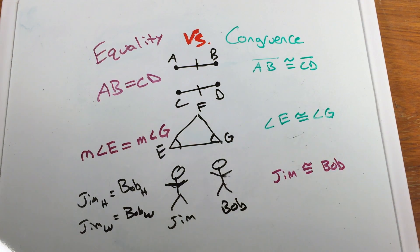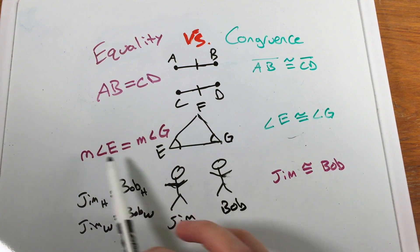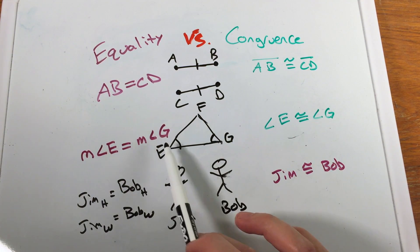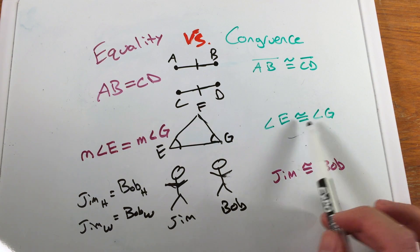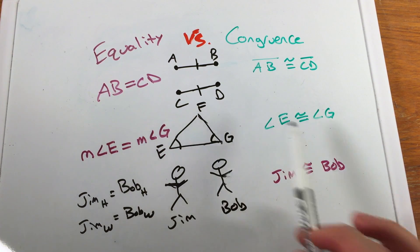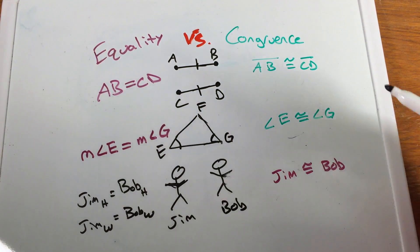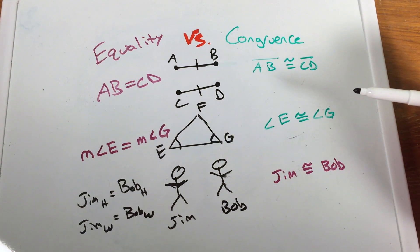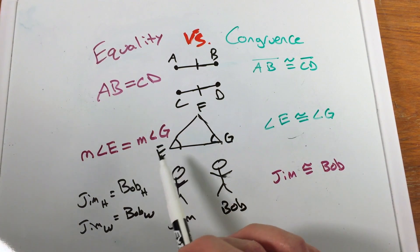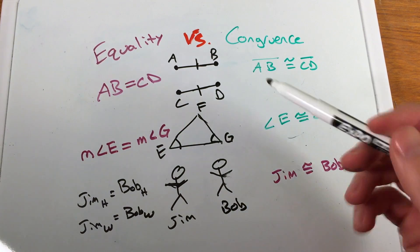It's the same thing with our shapes, our segments and our angles. We have measurement of angle E is equal to measure of angle G, and angle E is congruent to angle G. These go back and forth by the definition of congruent segments or the definition of congruent angles. These are biconditional statements that allow us to go back and forth between them.